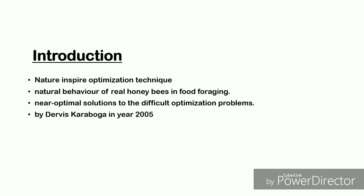ABC is a nature-inspired optimization technique for many fields of science and applications such as operations research, economics, network analysis, optimal design of mechanical and electrical systems, etc. ABC tries to model the natural behavior of real honeybees' food foraging, and finds near-optimal solutions to difficult optimization problems.